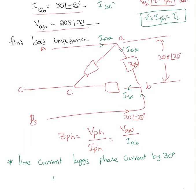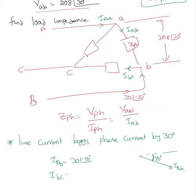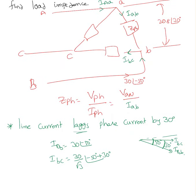If I gave you IBB, which is the line current, 30 at an angle of minus 50 — if I draw the vector diagram, minus 50 is going to be somewhere there, about 50 degrees. That's IBB, the line current. What is the phase current IBC? IBC must be 30 divided by square root 3 at an angle of minus 50. The line current lags the phase current, so phase current is coming first — that means we add plus 30 degrees. We end up with minus 20 degrees. So 30 divided by square root 3 is 17.32 at an angle of minus 20 degrees.